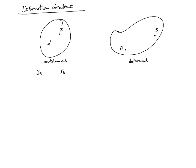If the position vector of A is given by location X, Y, and Z in 3D — and in 2D it would be only X and Y — and since R_B is at an infinitesimal distance from R_A, we can write R_B as X plus delta X, Y plus delta Y, and Z plus delta Z.